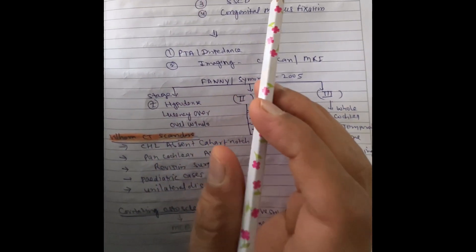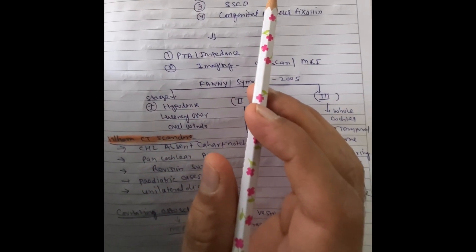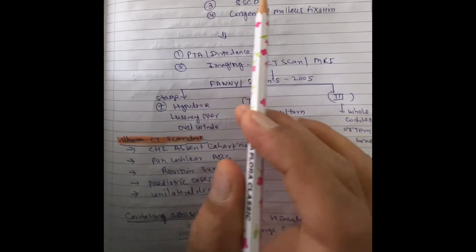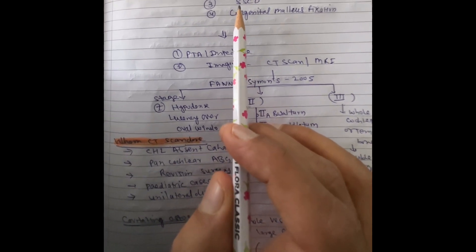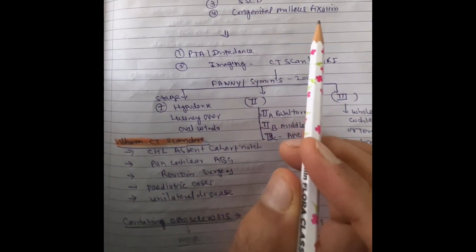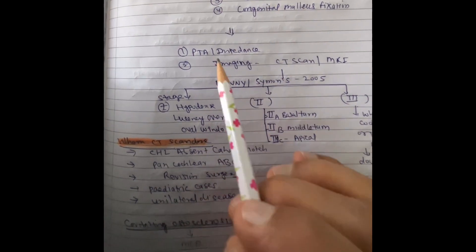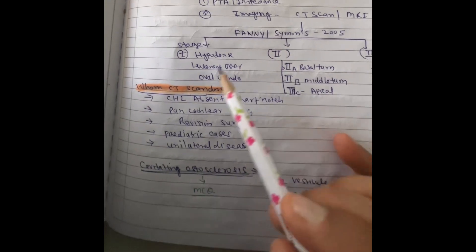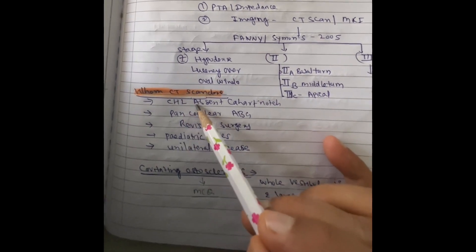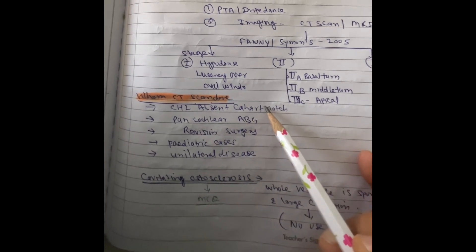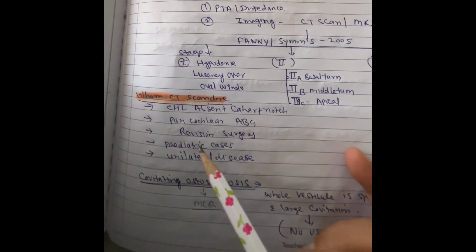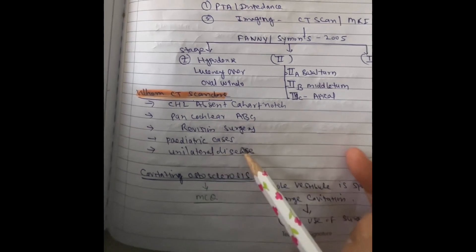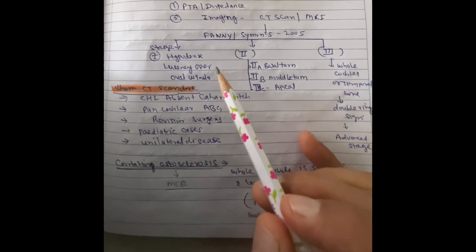The differential diagnosis of otosclerosis includes any patient presenting with a normal tympanic membrane and conductive hearing loss — such as superior semicircular canal dehiscence, congenital malleus fixation, and otitis media with effusion. For imaging, CT scan is indicated mainly when conductive hearing loss is present with absent Carhart's notch, pan-cochlear air-bone gap, revision surgery, pediatric cases, or unilateral disease.